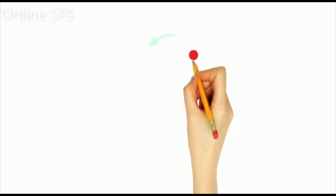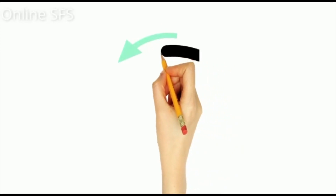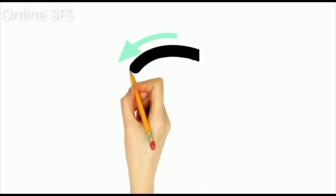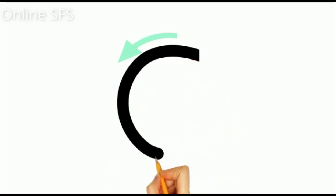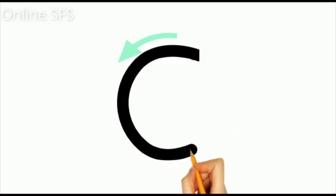Let's see how we write K again. Start from the red dot, turn towards your left and make a curly caterpillar. K. Caterpillar. Thank you. Bye bye.